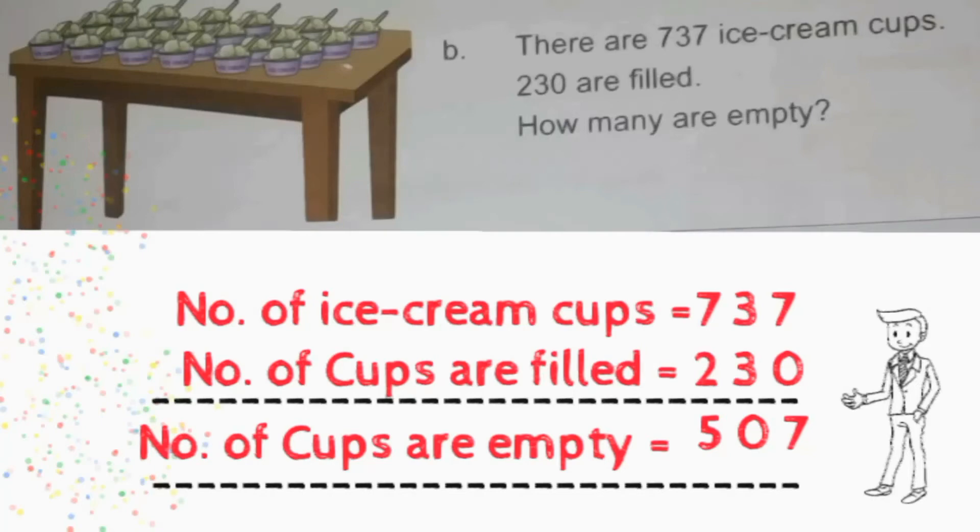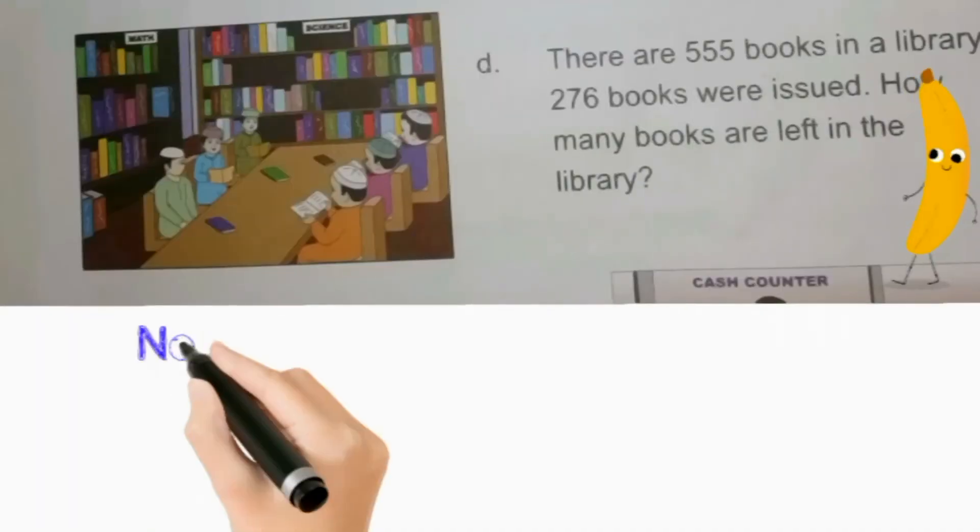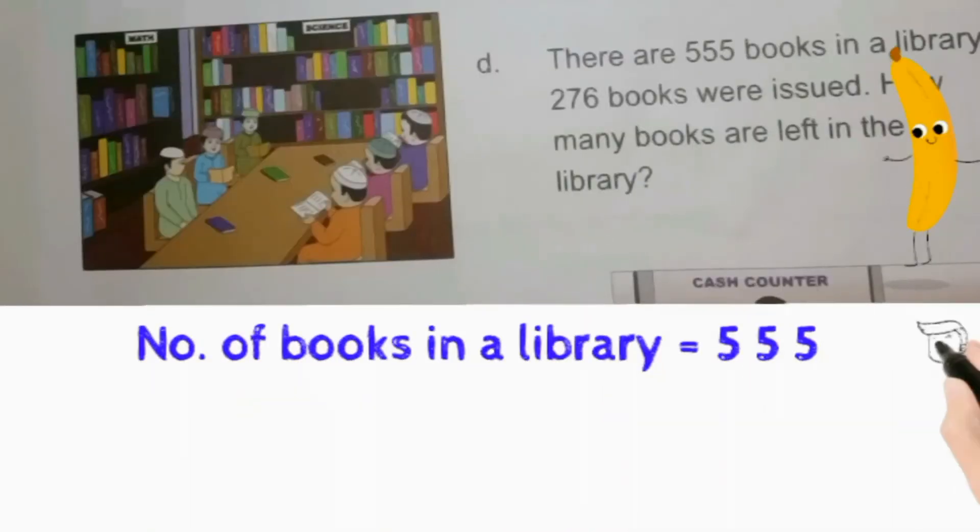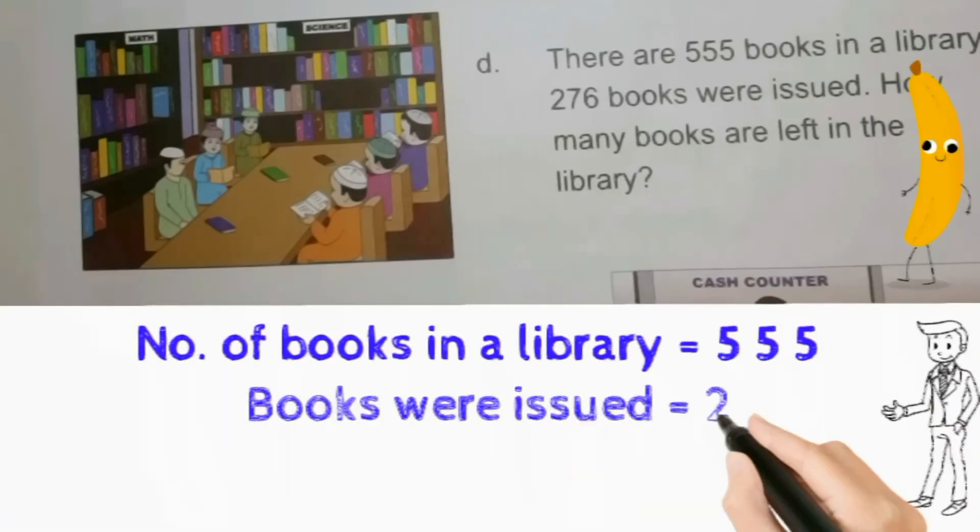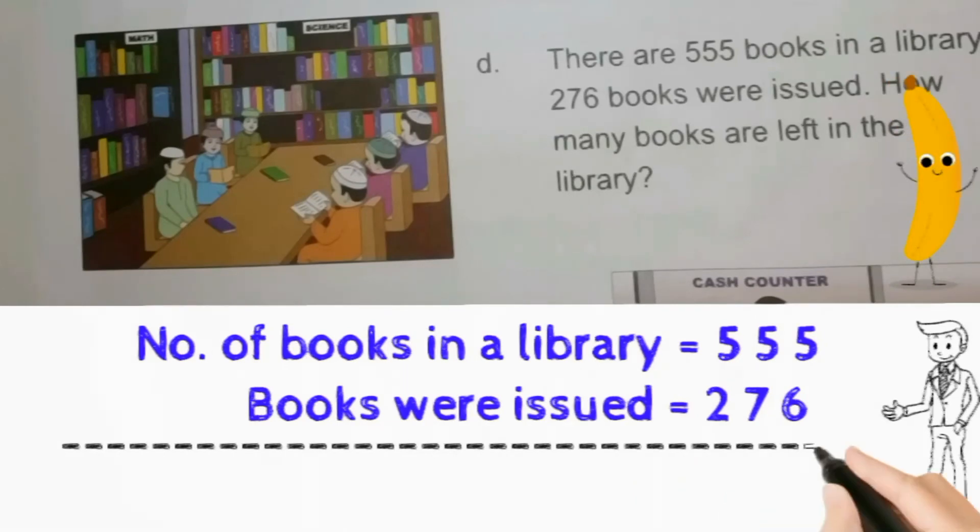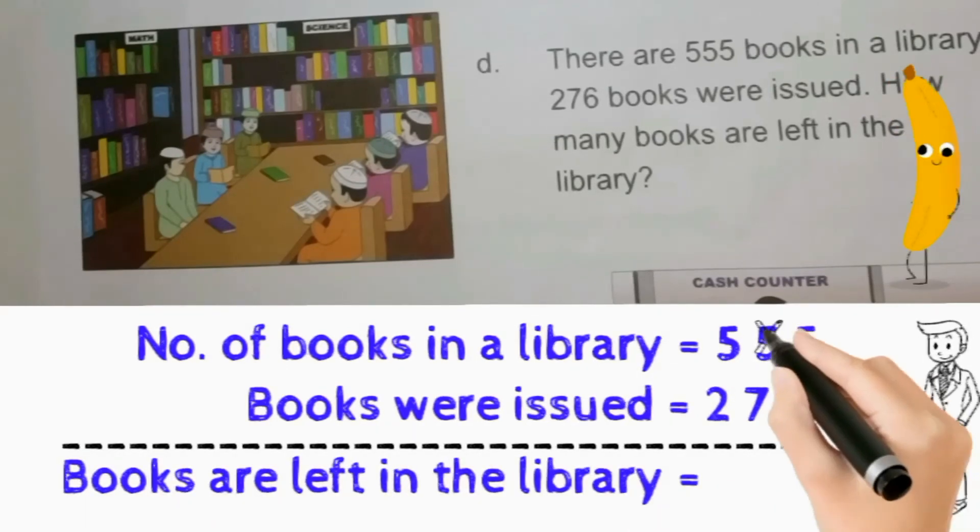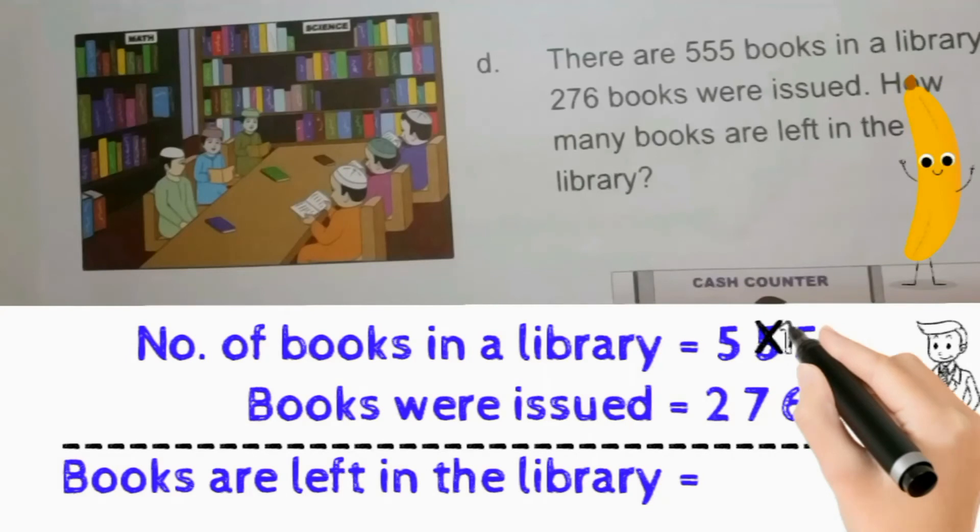Now another example: There are 555 books in a library. 276 books are issued. How many books are left in the library? So how we write a statement?